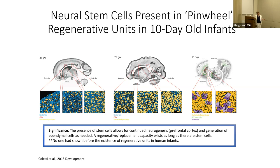In mice, neonatal neurogenesis contributes to the olfactory bulb, whereas in humans new neurons contribute to the prefrontal cortex or the migratory pathway to the prefrontal cortex, with a smaller contribution to the olfactory bulb. So neurogenesis after birth seems important but contributes to different regions, and that's a whole other project we're pursuing in the lab.